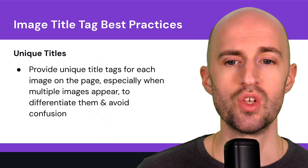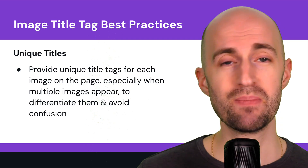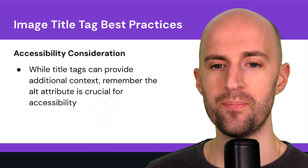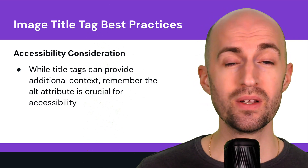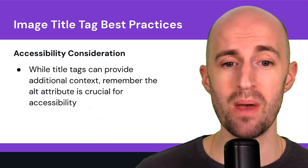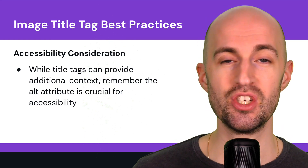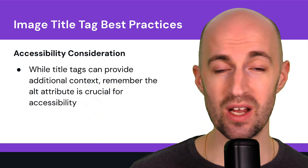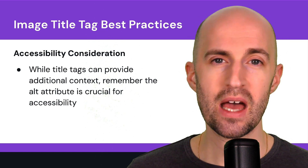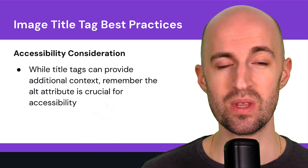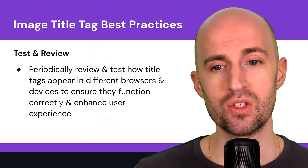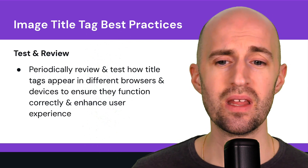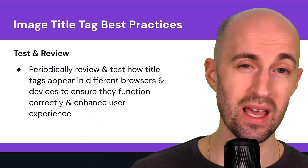Unique titles — it's important to provide unique title tags for each image on the page, especially when there are multiple images on that page, to differentiate and avoid any confusion between them. Accessibility consideration — while title tags can provide additional context, remember the alt attribute on the image is crucial for accessibility, especially for those with visual impairments who use screen readers. Those attributes help them to understand the images without seeing them. Test and review — periodically review and test how the title tags appear in different browsers and devices to ensure they function correctly and enhance the user experience.